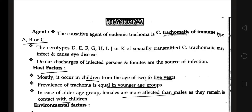We'll start with a new topic: trachoma. The agent causing trachoma is C. trachomatis of immune type A, B, or C — these are the serotypes of C. trachomatis. The serotypes from D to K (D, E, F, G, H, I, J, K) of sexually transmitted C. trachomatis may also infect and cause eye disease.